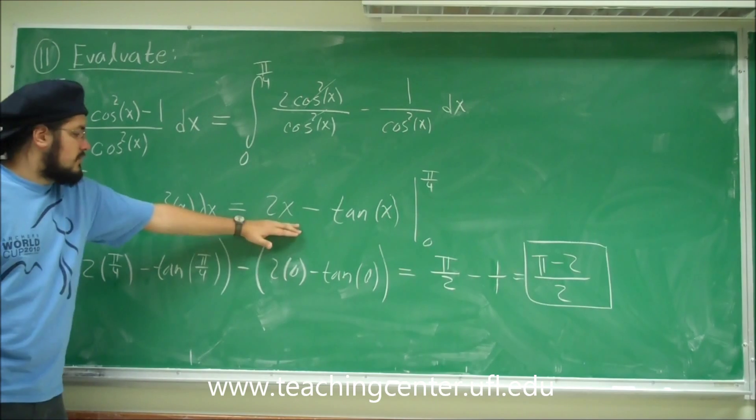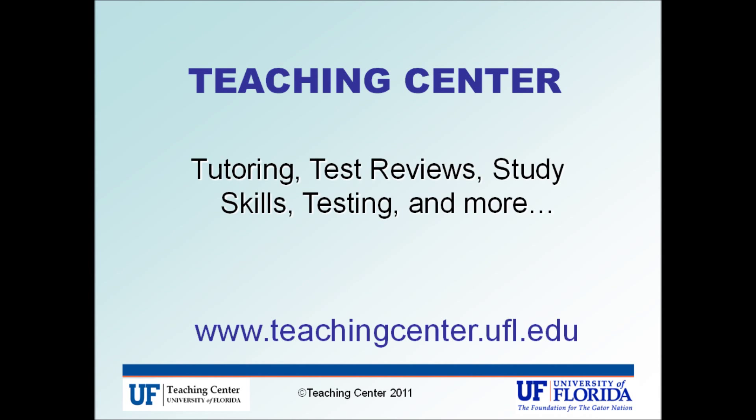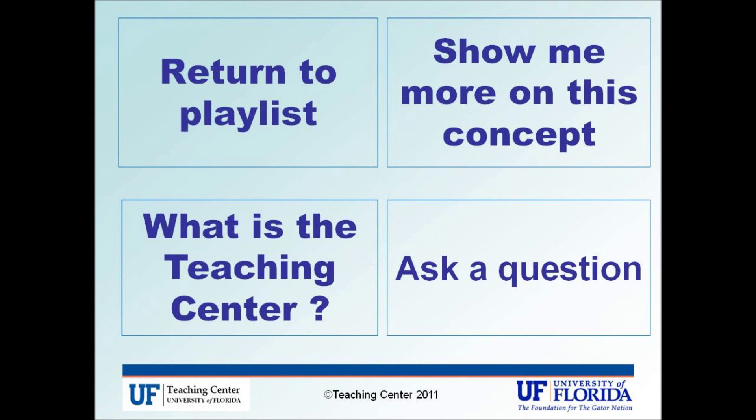So find a function that when you take the derivative, you get 2. That function is 2x. And then find a function that when you take the derivative of that function, you get secant squared. That function is tangent of x. And then you evaluate it from 0 to pi over 4. So plug in pi over 4 first and then plug in 0. And that's what you get. Okay? We'll be right back.